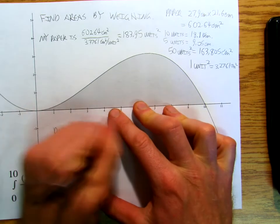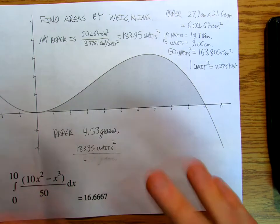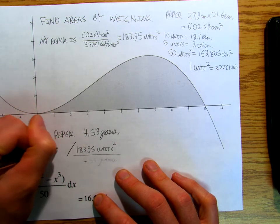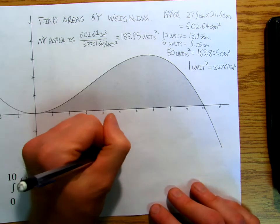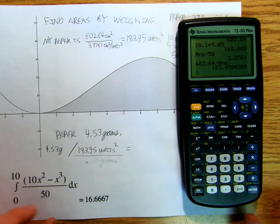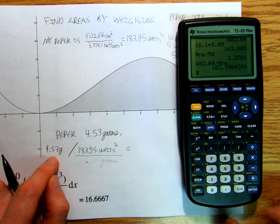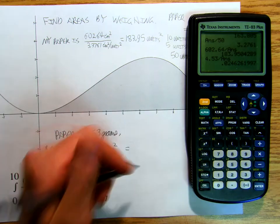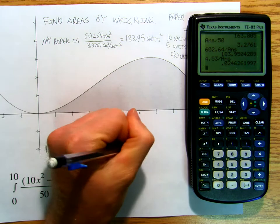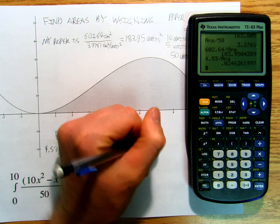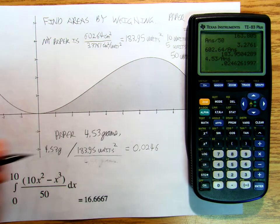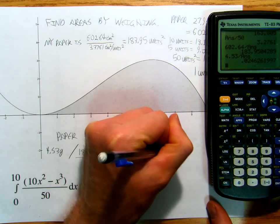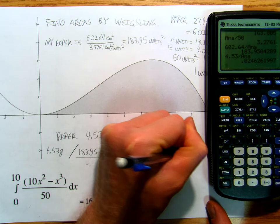Or I just want to put it the other way. I want grams per unit. 4.53 grams divided by 183.95 units squared is, I do 4.53 divided by answer. I'm going to get 0.0246. I'll do one more unit. Grams per unit. Unit squared.